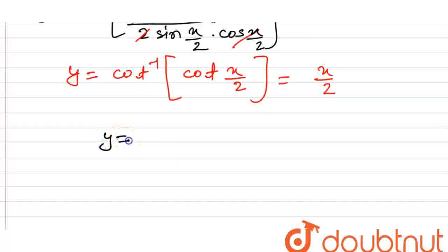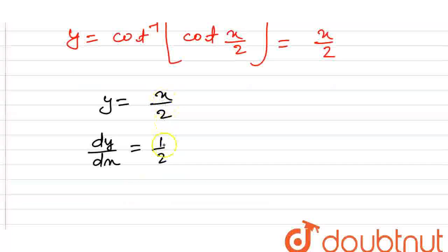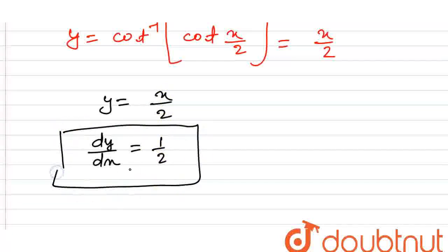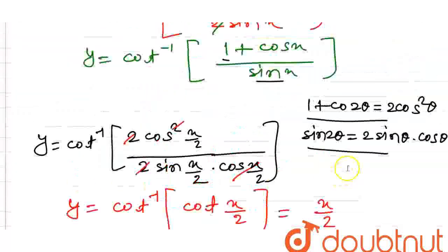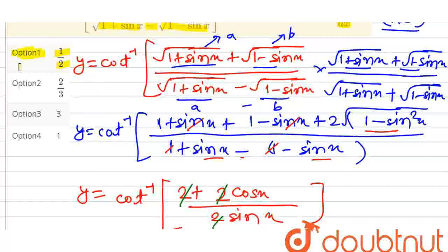Therefore, y = x/2. Differentiating both sides with respect to x, dy/dx = 1/2. Checking the options, option number 1 is 1/2, so option number 1 is the correct answer. Thank you.